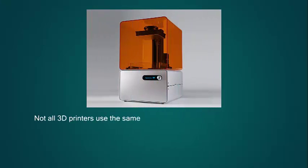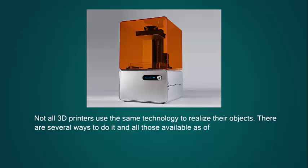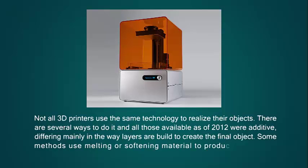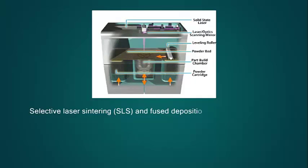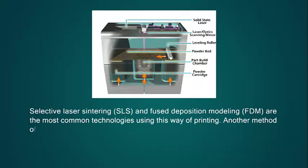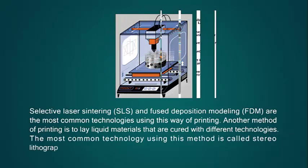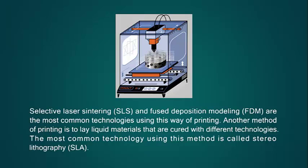Not all 3D printers use the same technology to realize their objects. Some methods use melting or softening material to produce the layers. Selective Laser Sintering (SLS) and Fused Deposition Modeling (FDM) are the most common technologies using this method of printing. Another method is to lay liquid materials that are cured with different technologies. The most common technology using this method is called Stereolithography.